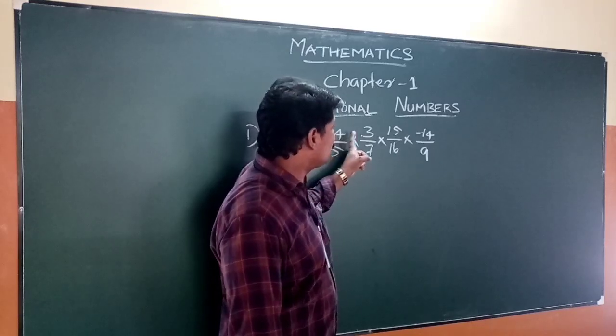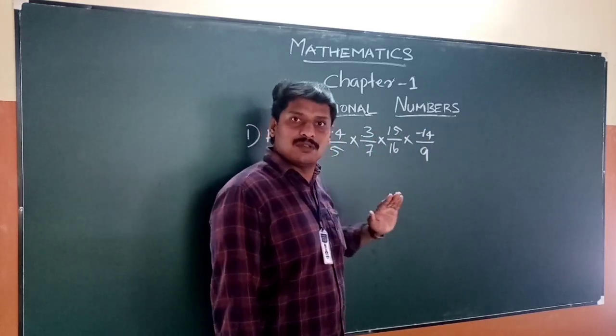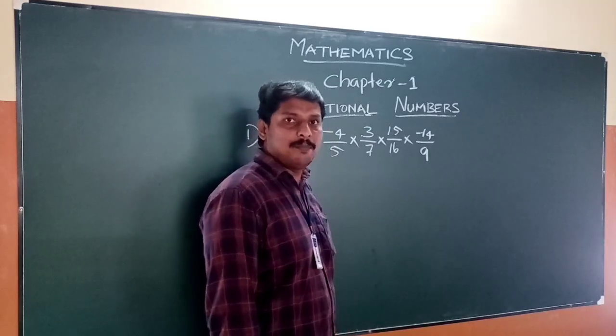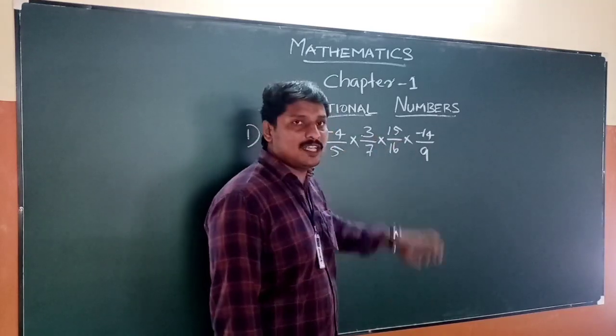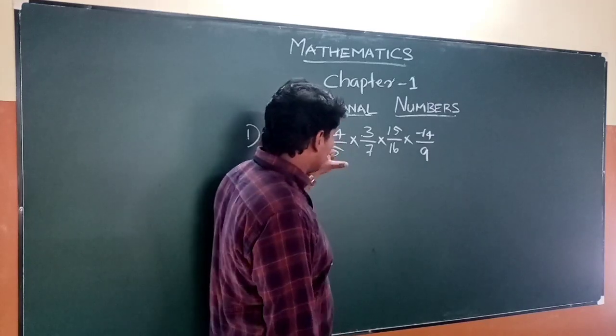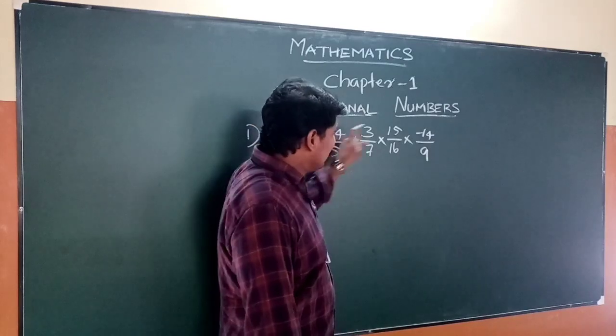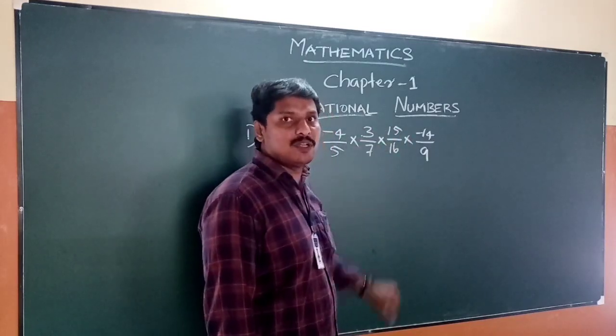When we multiply rational numbers, we multiply numerator with numerator and denominator with denominator. We can use the associative property of multiplication, which allows us to change the order to simplify the calculation.